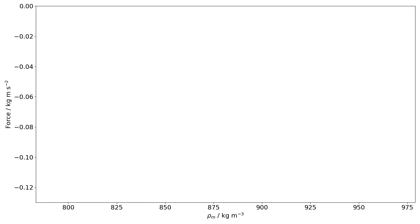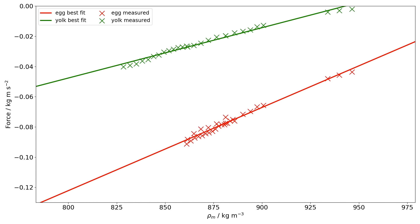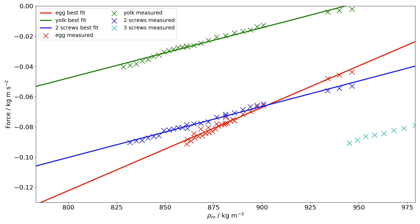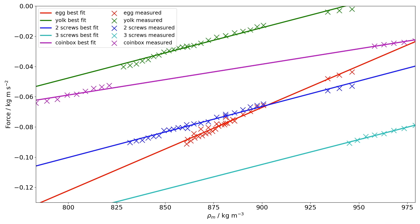So here are the results. The density of the medium sits on the x-axis and the force sits on the y-axis. You will notice that there is a minus sign by the force to show that it is downward. The raw measurements will be shown followed by a best fit line. We start with the raw measurements for the egg, followed by the yoke filled with water, then the yoke with two screws, three screws, and now the sample boxes, box one and box two.